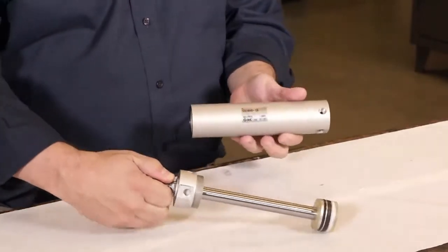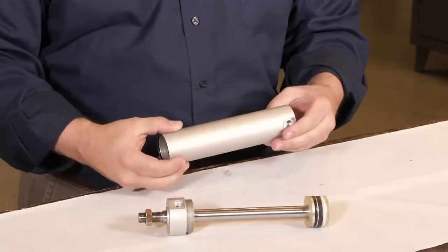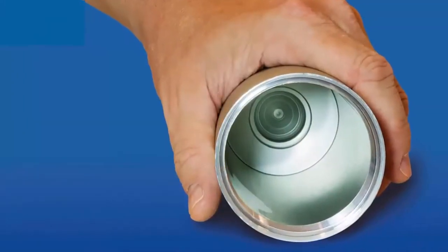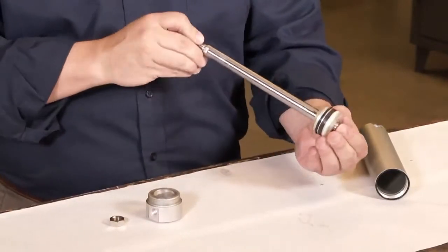First, do a general inspection of the parts. On the body, are there scratches, dings, discoloration? Is there a light and even sheen of lubrication on the inside of the body? Is the rod bent or is the thread damaged?